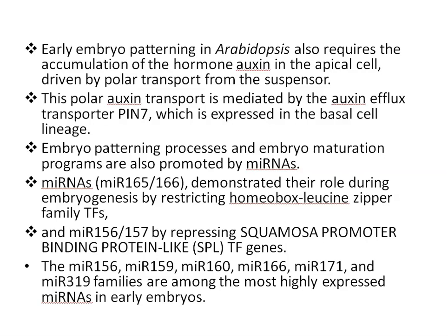Early embryo patterning in Arabidopsis also requires the accumulation of the hormone auxin in the apical cell, driven by polar transport from the suspensor. This polar auxin transport is mediated by the auxin efflux transporter PIN7, which is expressed in the basal cell lineage. Later in embryo development, other auxin transporters such as PIN1 are expressed in the apical pro-embryo. Auxin regulates pattern formation in the embryo, and differences in auxin response, auxin biosynthesis, and auxin transport affect embryonic development.